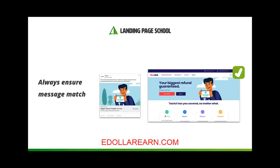In Part 4, we covered a lot of things, but one of the tactics was the idea of message match. Do you remember seeing the example of an ad and landing page that has great message match? The general idea is to ensure that when people click through to your landing page, they are confident they are in the right place. They should feel like your landing page is a natural continuation of the ad they just saw or the email they just read. That's when you know you have a high level of congruency and message match.